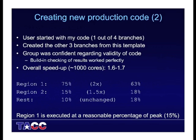The group was then confident regarding the validity of the code. The built-in checking of the result worked perfectly, and they created a version of the code they could run with their usual setup of thousands of cores. They got a speedup of 1.6 to 1.7. Breaking it down: region 1 got a speedup of 2x, region 2 of 1.5x — these are rough numbers — and the rest was unchanged. It went from a 75-15-10 split to a 60-20-20 split. Regions 1 and 2 are now executed at a reasonable percentage of peak, which was about 15%.